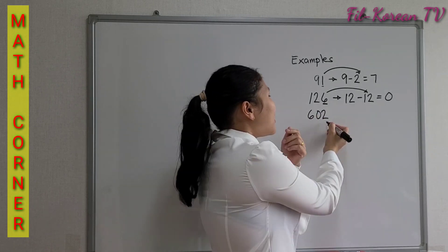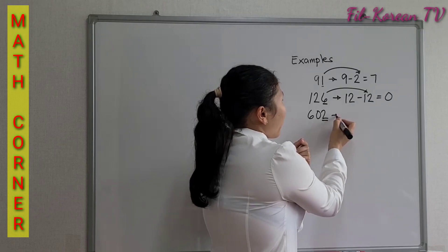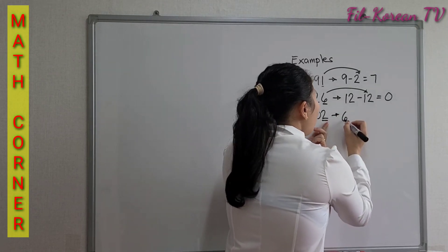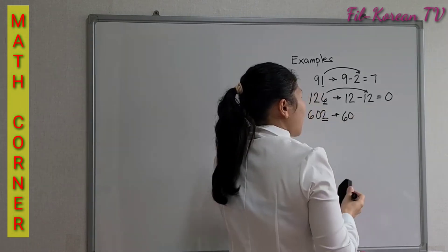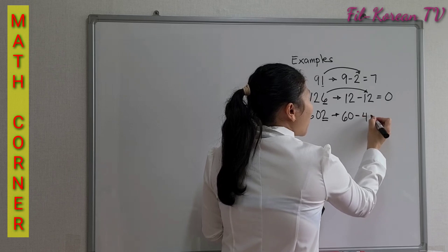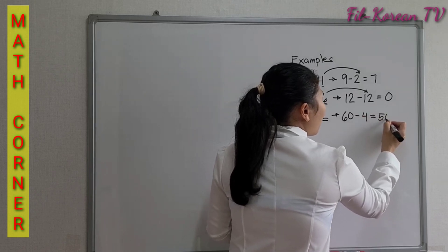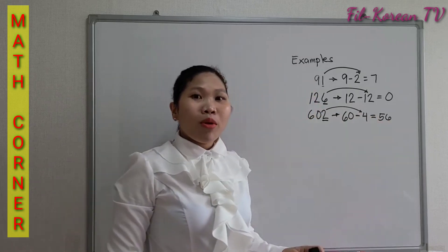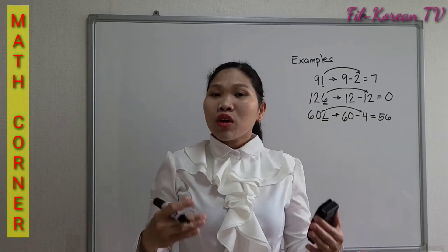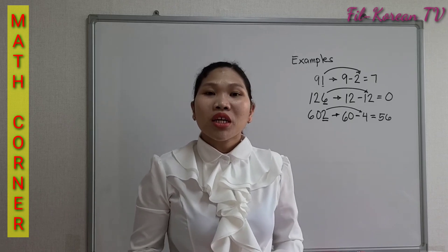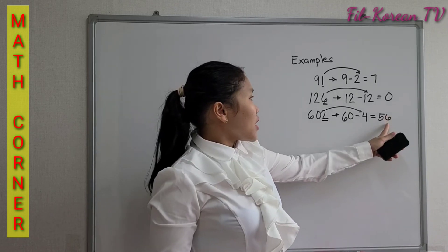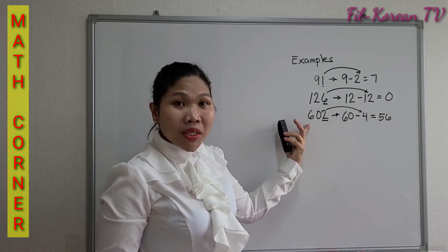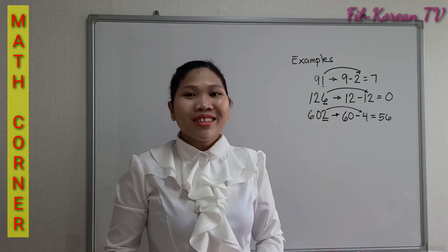Another example is 602. The last digit is 2. If we double 2, it will become 4, and we subtract this from the remaining number, which is 60. Sixty minus 4 equals 56. Since 56 is a multiple of 7 — because 7 times 8 equals 56 — therefore 602 is divisible by 7.